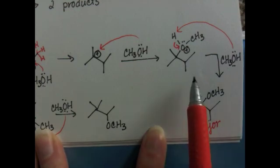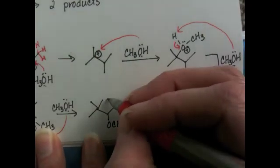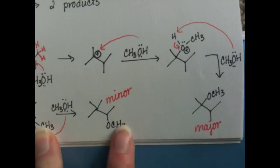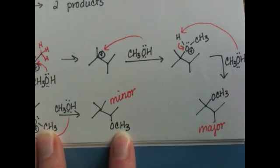This one's going to be the major product because it came from the most stable carbocation. It came via a mechanism that involved a tertiary carbocation. And this is the minor product of the reaction, but it's still produced in some significant quantity. And we're going to do one more example of an SN1 rearrangement mechanism.